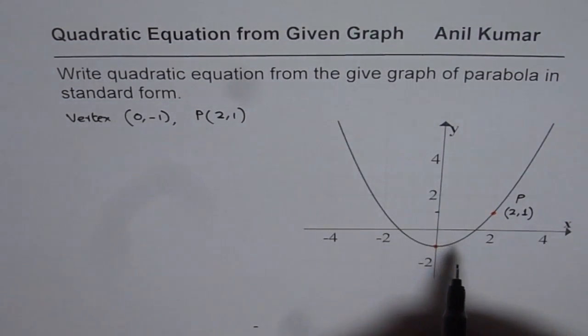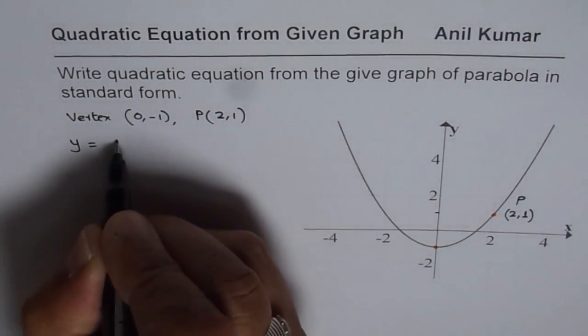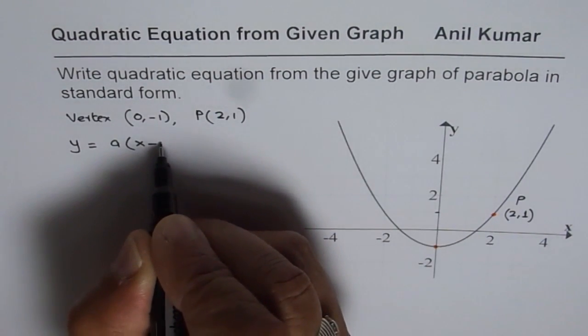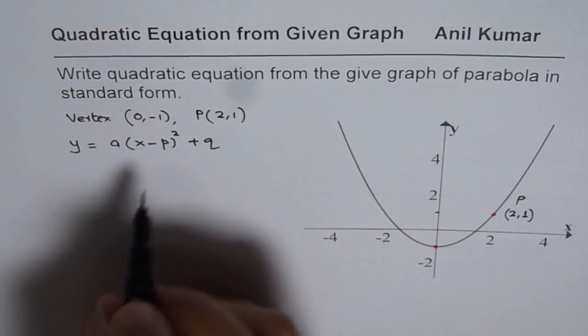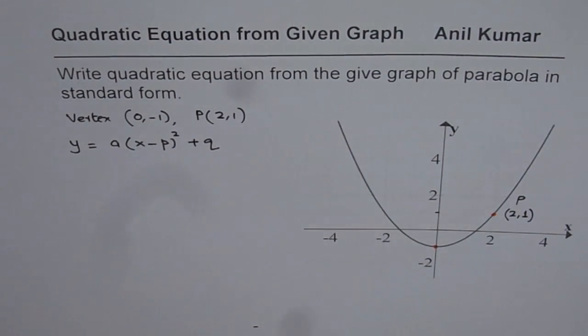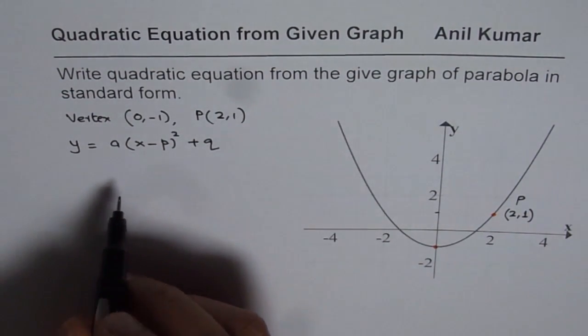To write down the equation of parabola, we can start with the vertex form which in general is y = a(x - p)² + q, where p and q are x and y coordinates of vertex. Some books will write d and c, h and k - you could use any alphabets.